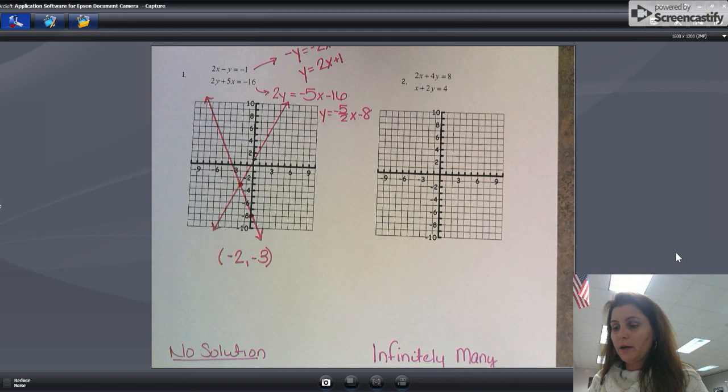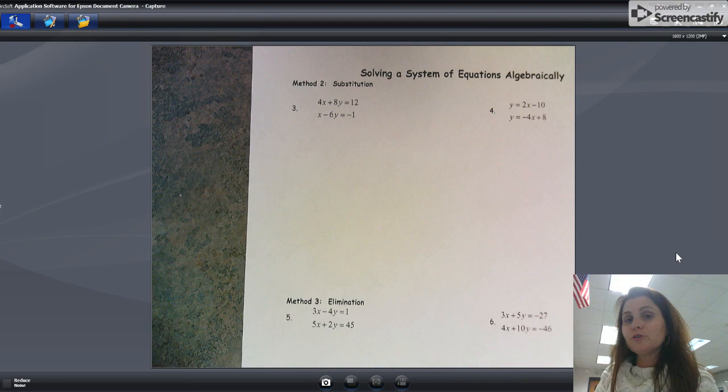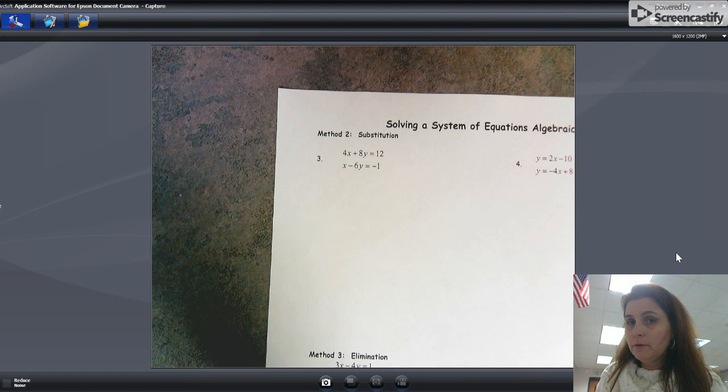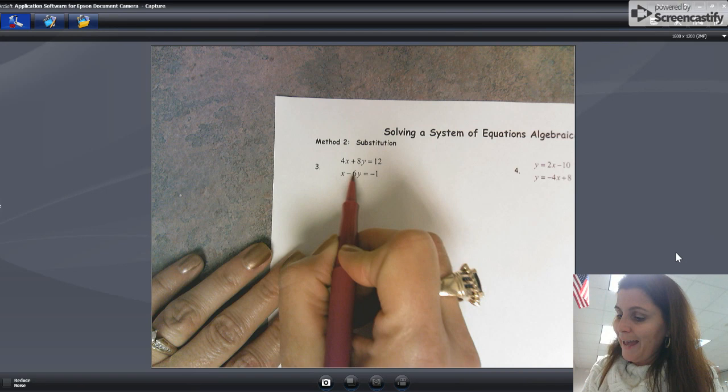Okay, so there we go, solving systems by graphing. Again, you do number two. But moving right along, before we do that, I'm going to solve. Now our other two methods are solving algebraically. First one is substitution. To solve by substitution, what we want to do is solve one of our equations for one of the variables and sub it into the other equation.